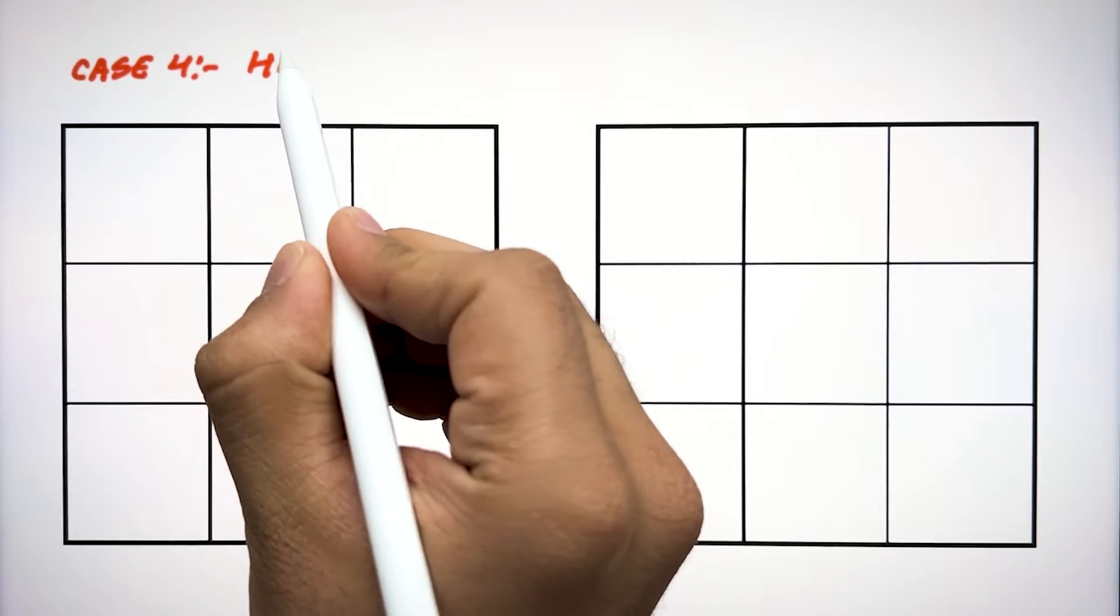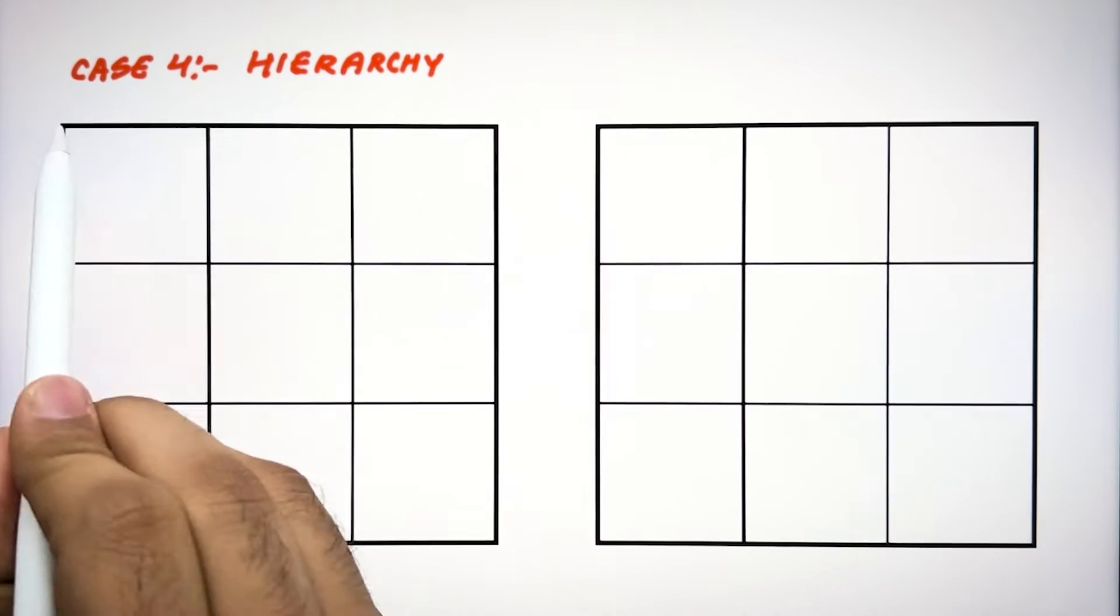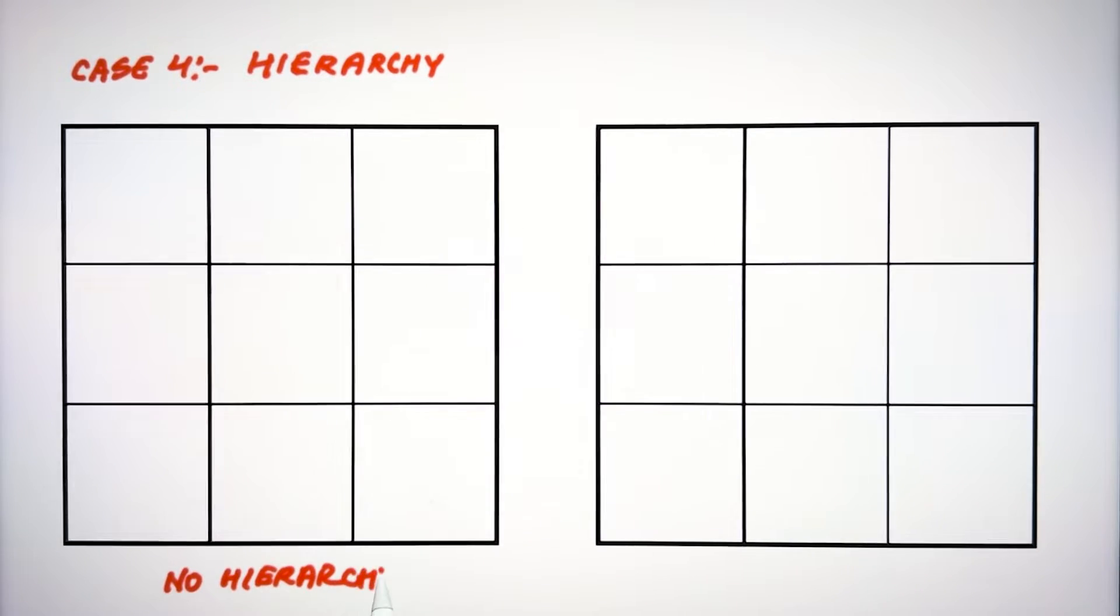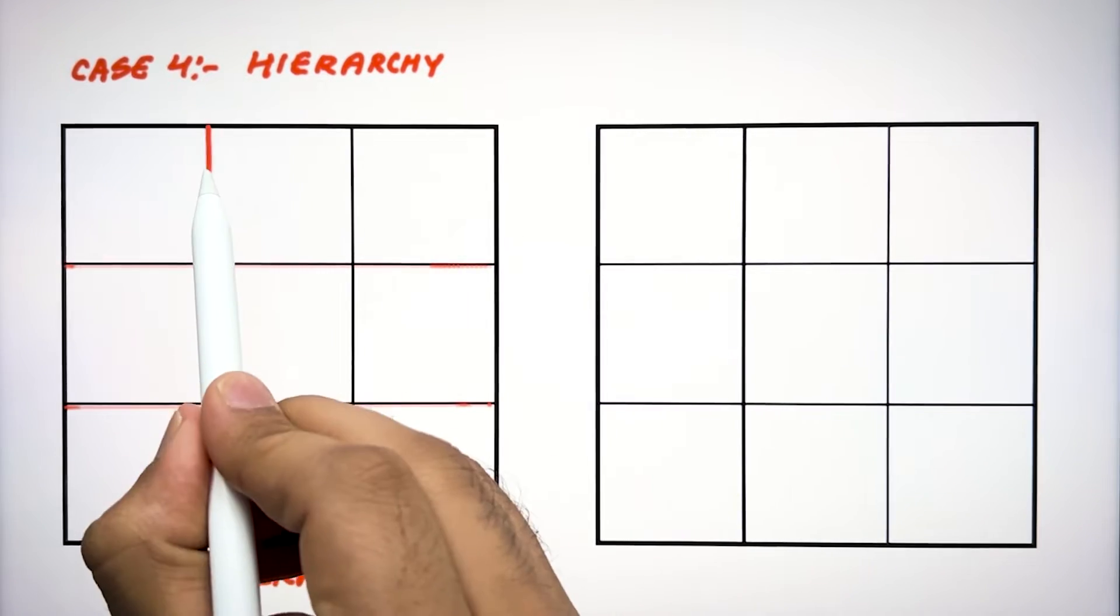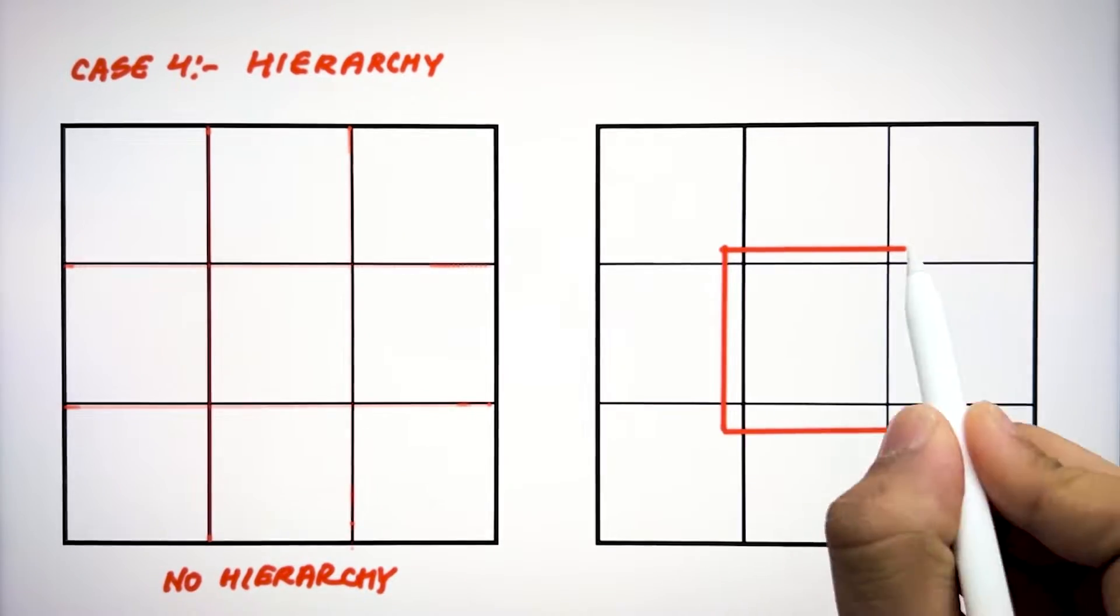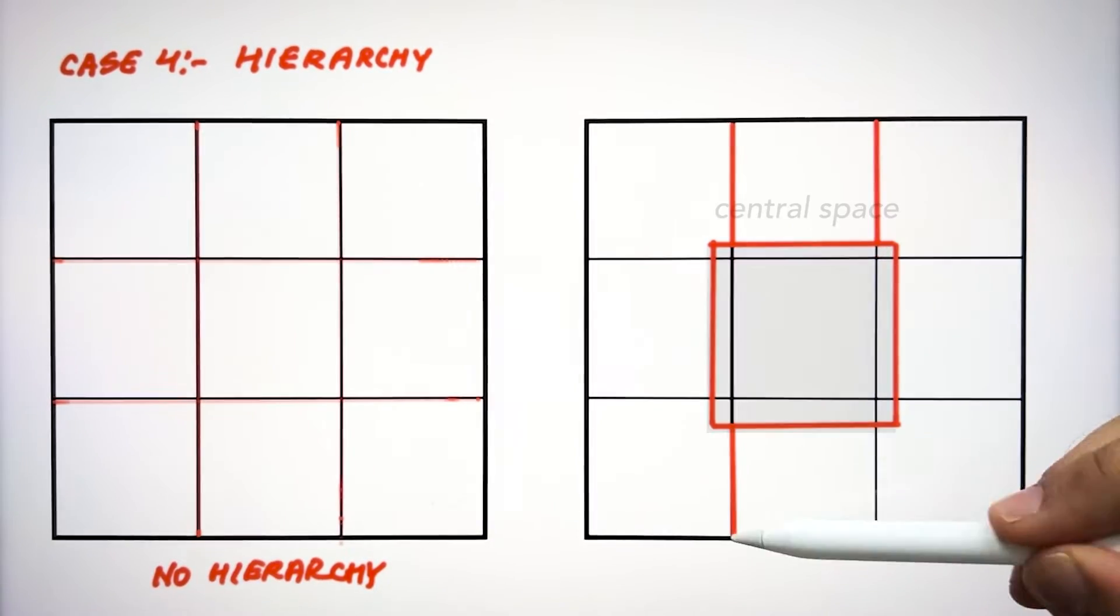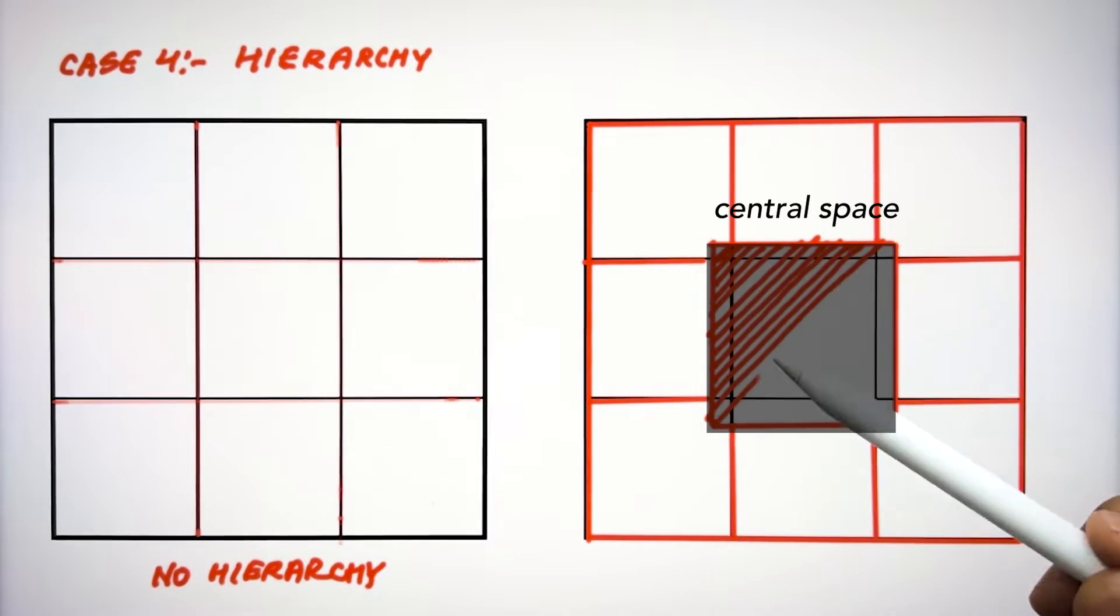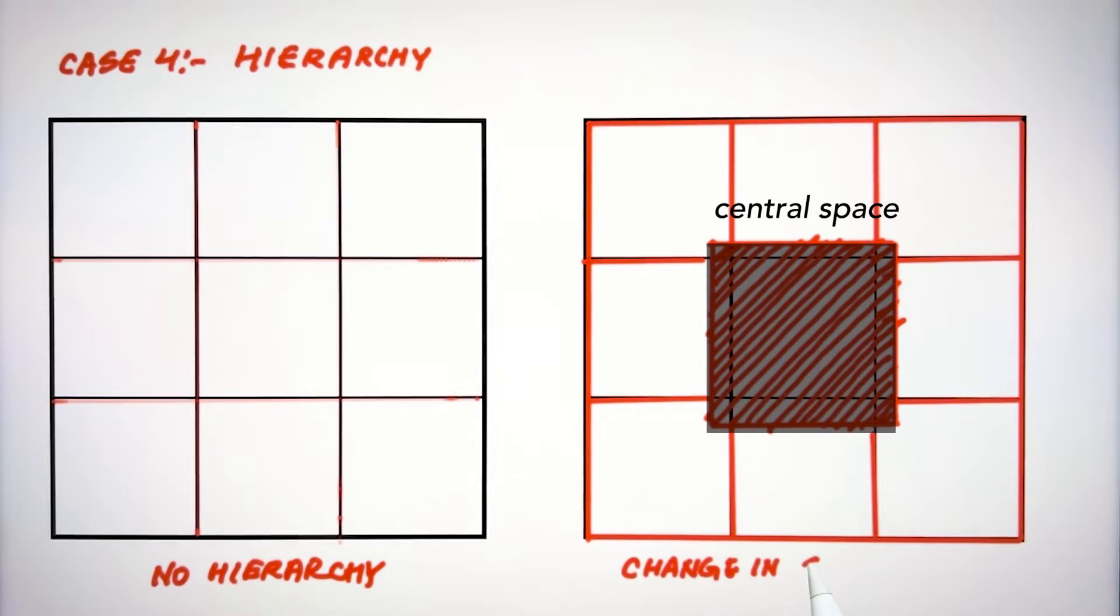The system of hierarchy provided by these nine grids always creates a hierarchy in the space. When we arrange the spaces on all nine equal grids, there is no hierarchy in the system. But when we increase any of the spaces in these nine grid system, it starts to create a hierarchy in the system, and that space becomes more dominant into the whole space.